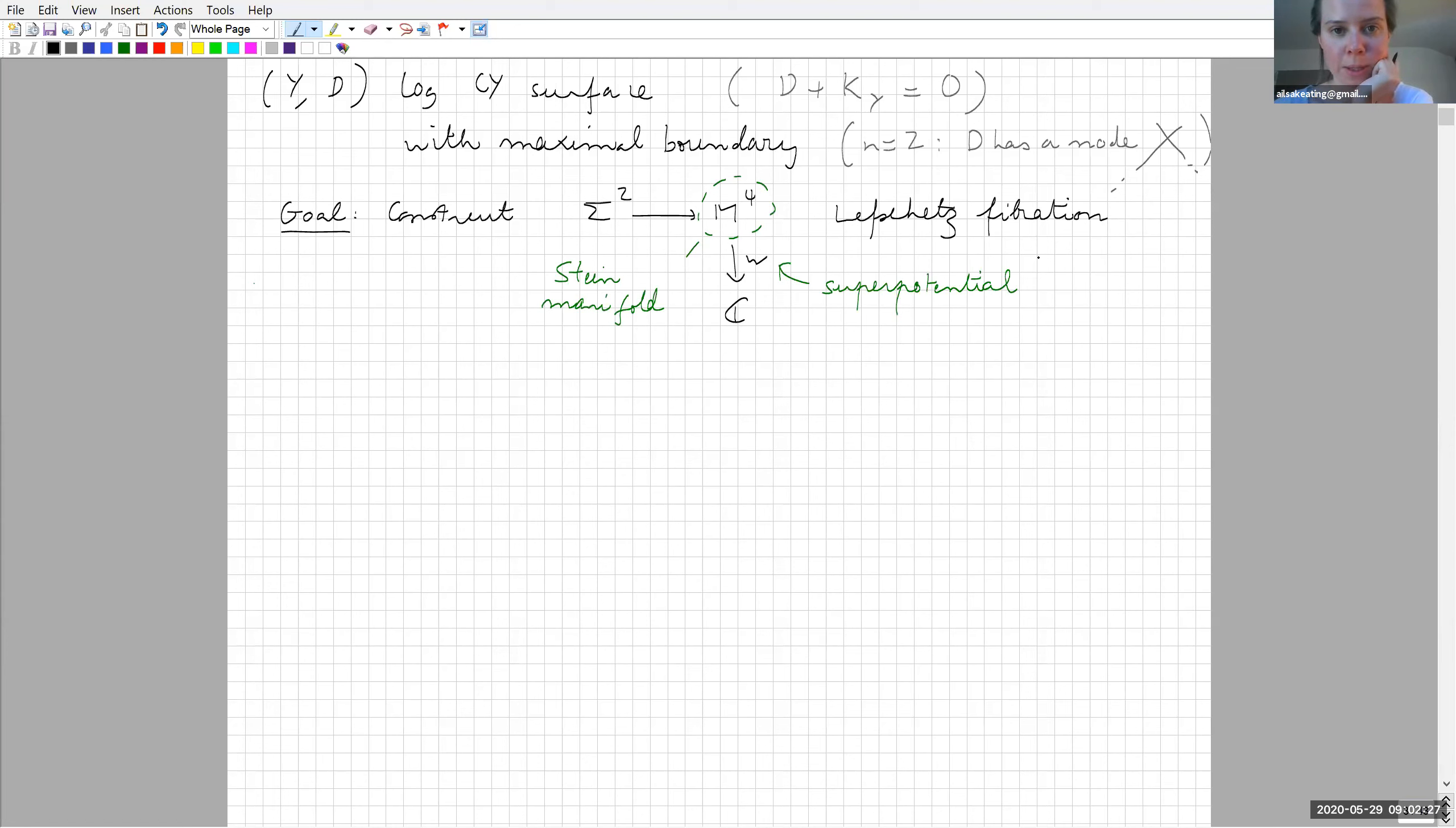The goal is to construct a mirror space. My mirror is going to be some Stein 4-manifold M equipped with a superpotential W: M → C, which is a Lefschetz fibration. There's going to be a triple of isomorphisms: coherent sheaves on Y are mirror to the directed Fukaya category of the superpotential, perf of D (since D is singular) is the Fukaya category of the fiber of my Lefschetz fibration, and coherent sheaves on Y delete D is the wrapped Fukaya category of M.